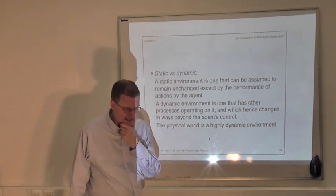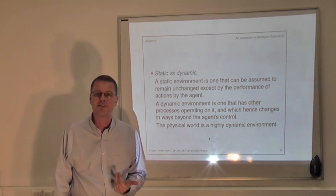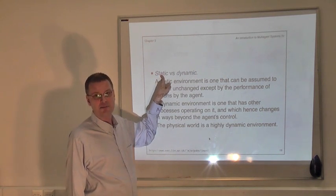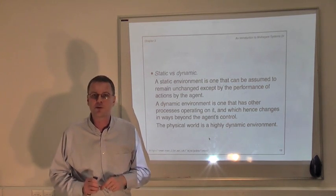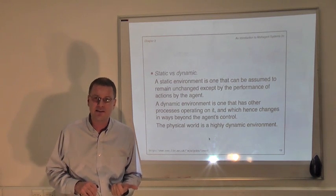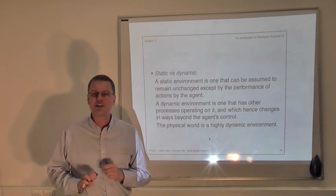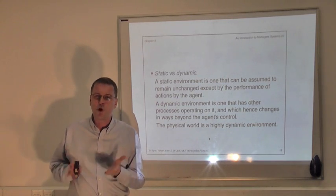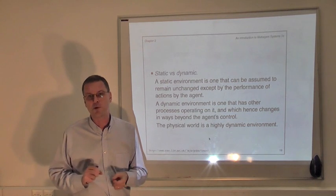Static versus dynamic is the final part of the classification. Intuitively, an environment is static if you are the only agent operating on it — if the only way things can change is by the actions you perform, making the environment essentially predictable. A dynamic environment is one where there are multiple processes or multiple agents operating within it, so things can change in ways beyond your control. I tend to use the following slogan to summarise this: a static environment is one where your keys are always where you left them. In a dynamic environment, somebody else can come in and move your keys, and the next morning you can't find them.